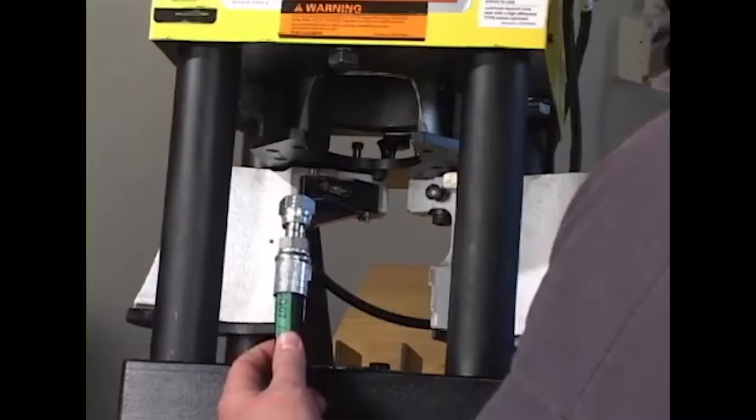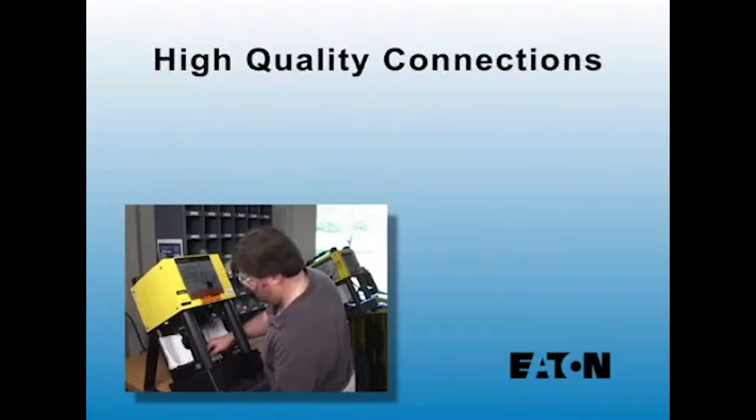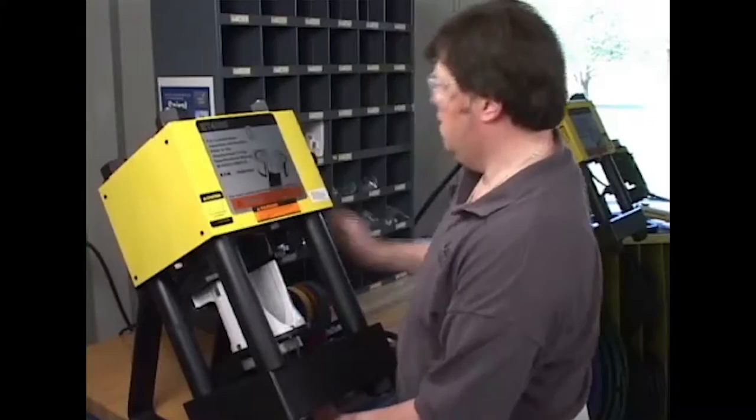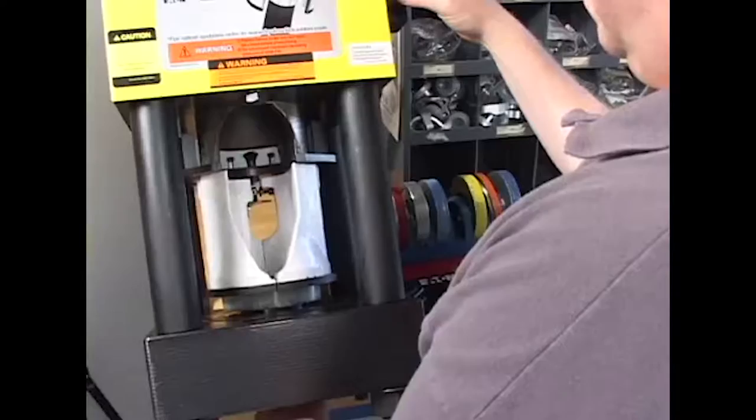Eaton Weatherhead hose assemblies made with ColoCrimp feature high quality connections, ease of operation, faster assembly time, and low maintenance. You can make your own OEM quality custom hose assemblies with a ColoCrimp system at a fraction of the cost.